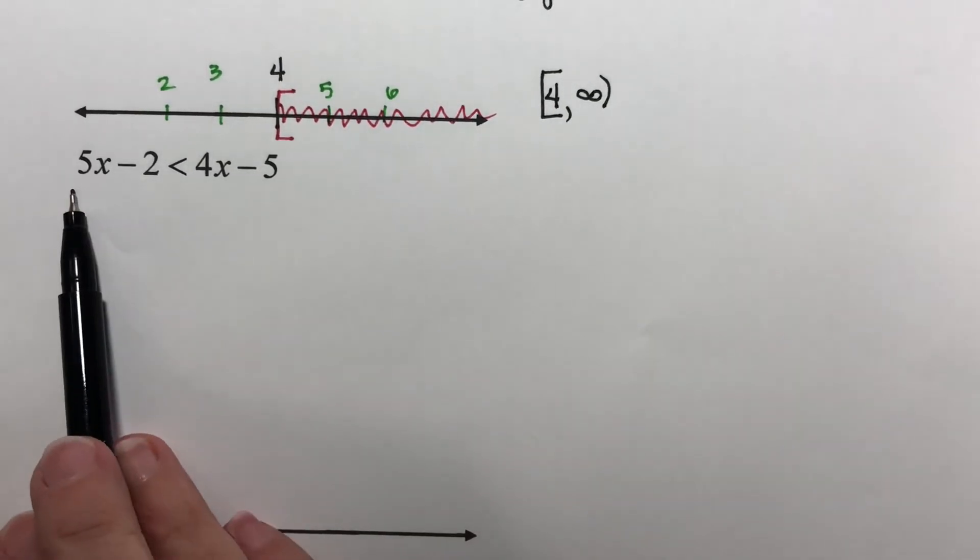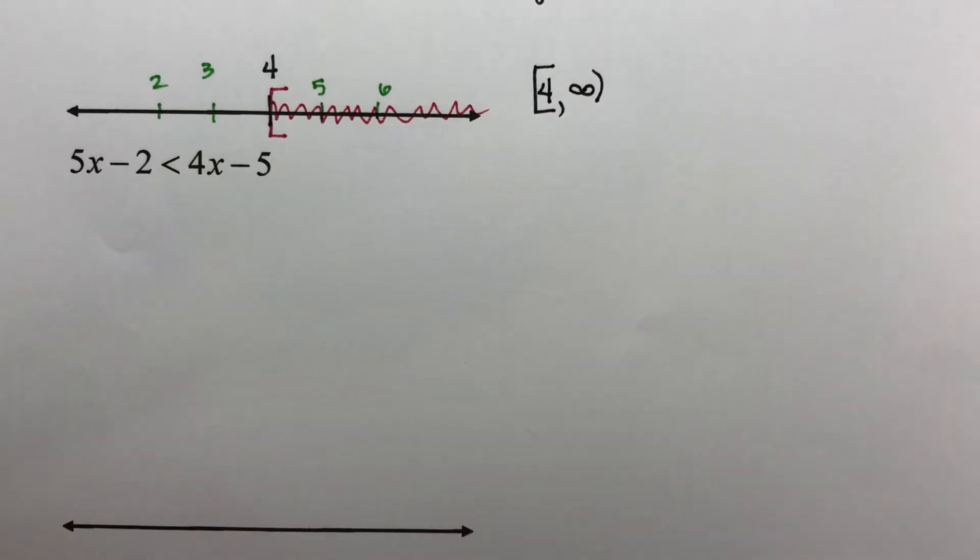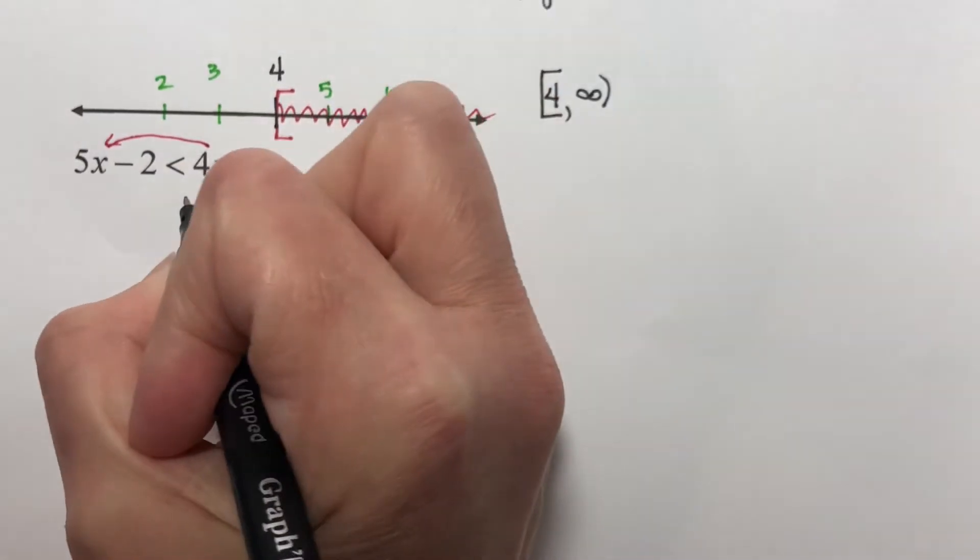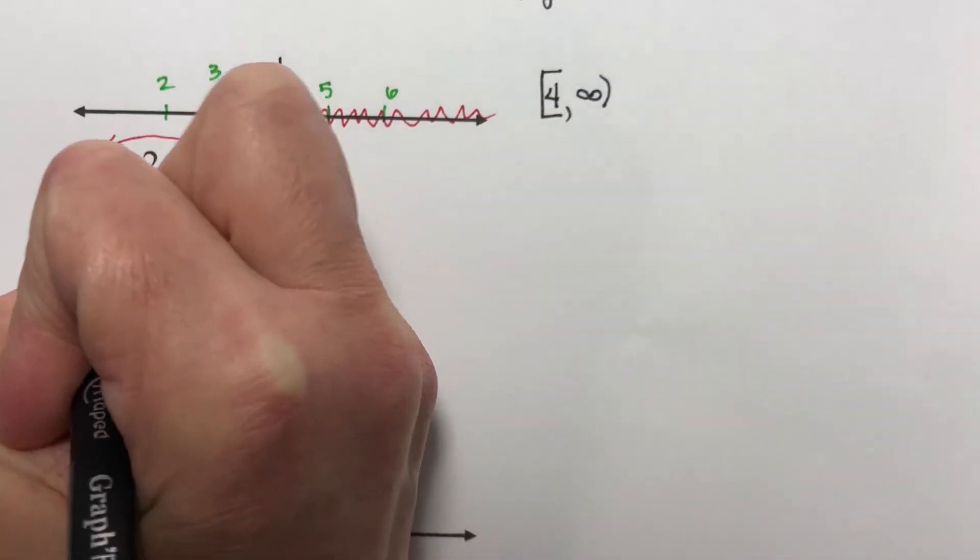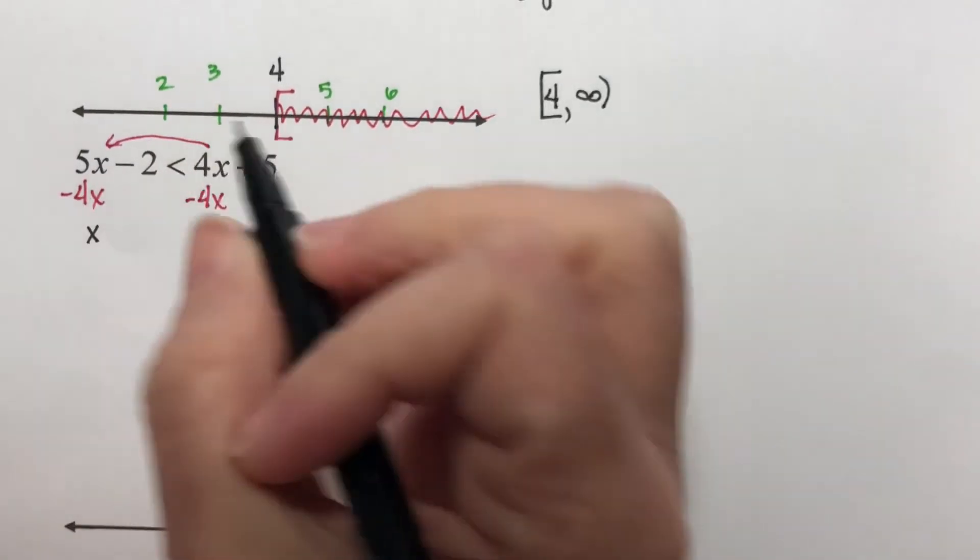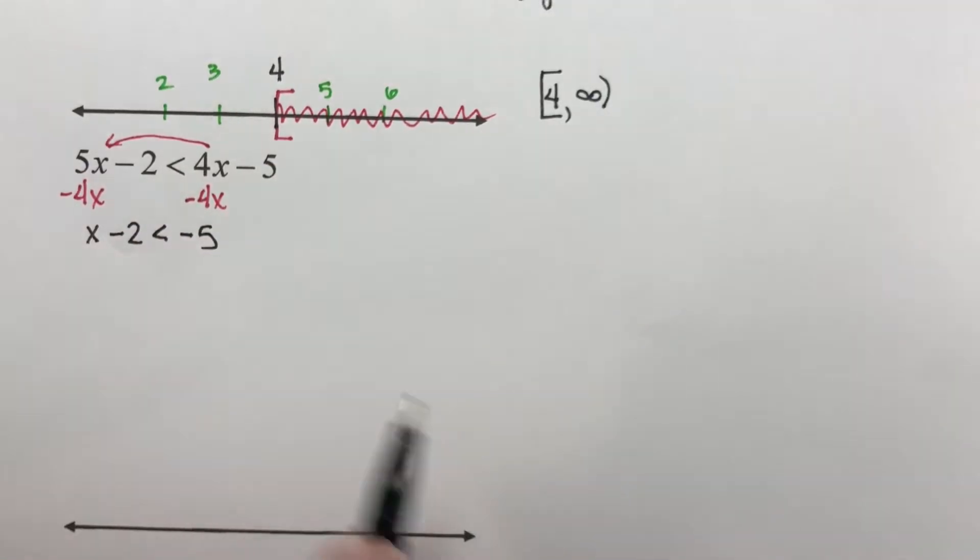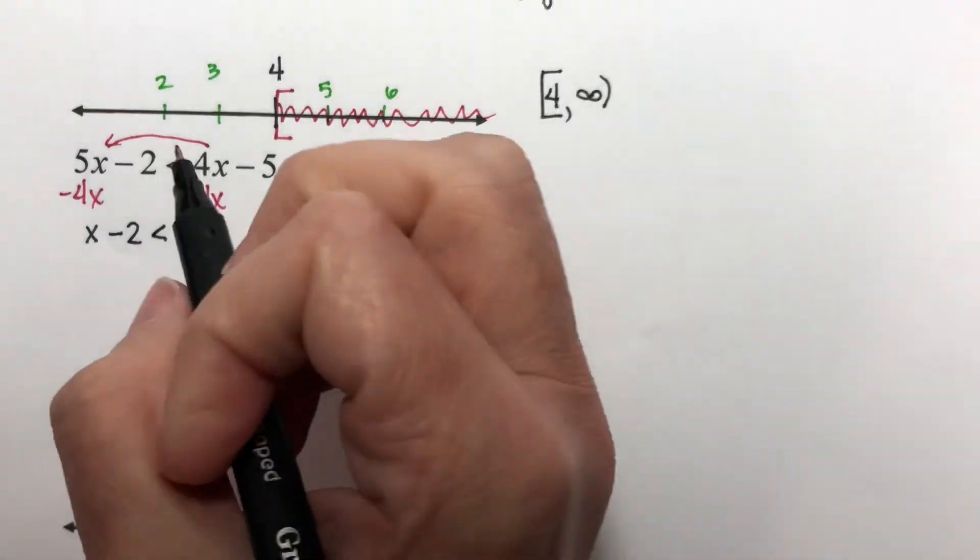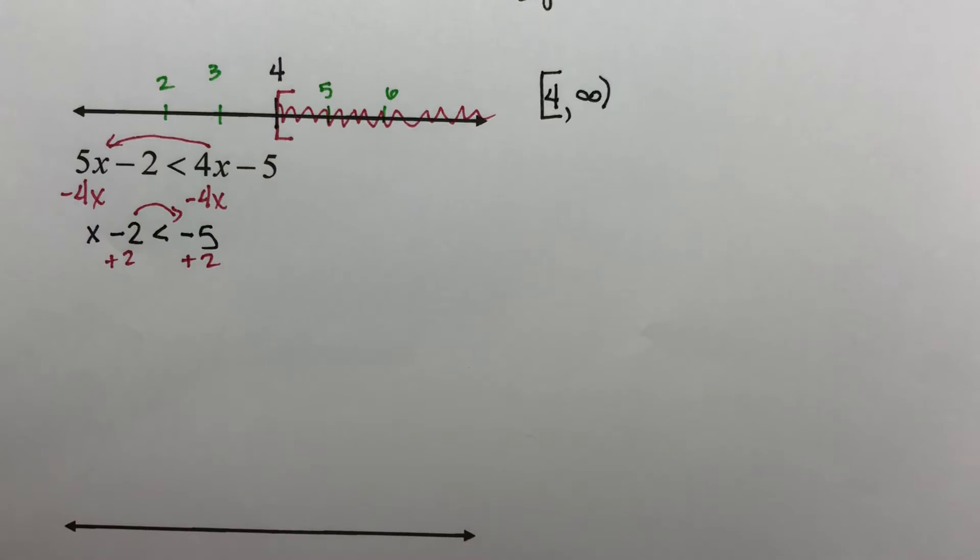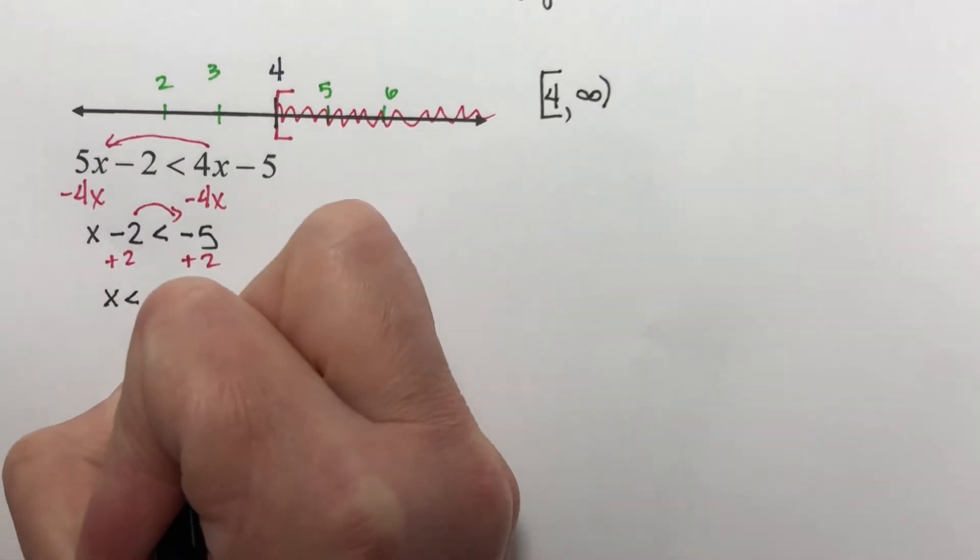Let's look at 5x minus 2 is less than 4x minus 5. Same type of problem. I need to get my x's together, so I'm going to subtract 4x from both sides. 5x minus 4x would be positive x, 1x, minus 2 is less than negative 5. Now I need to add 2 to both sides, and I have x is less than negative 5 plus 2 will be negative 3.